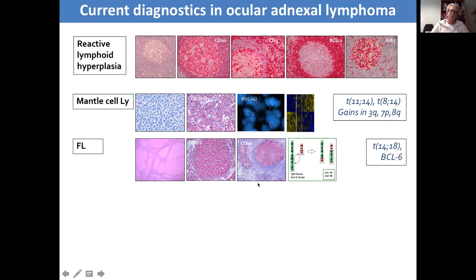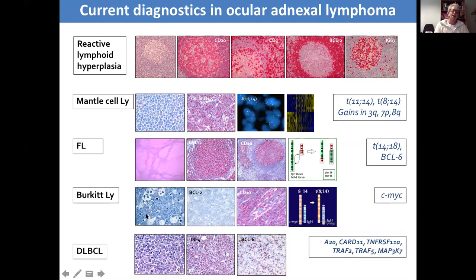Other differential diagnoses include follicular lymphoma and another small cell B-cell lymphoma that really shouldn't be overlooked: the mantle cell lymphoma. Mantle cell lymphomas are very aggressive B-cell lymphomas compared to MALT lymphomas, and when occurring within the ocular adnexa tends to be a secondary manifestation of an underlying systemic mantle cell lymphoma. You can also have aggressive diffuse large B-cell lymphomas in the orbit, and you must always exclude Burkitt lymphoma, particularly if receiving samples from Africa or India.